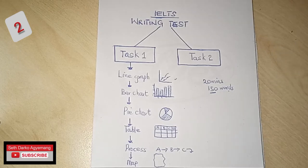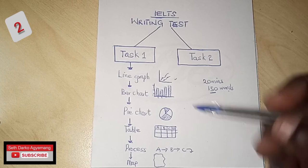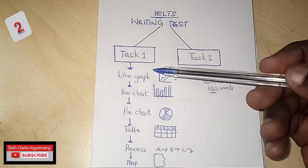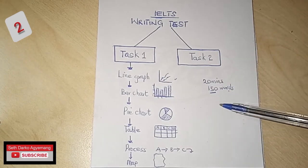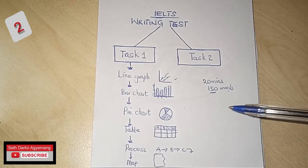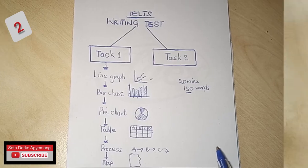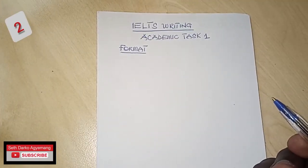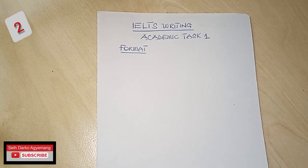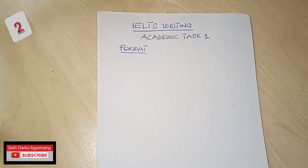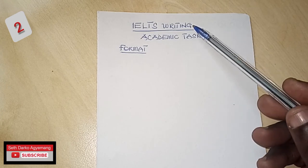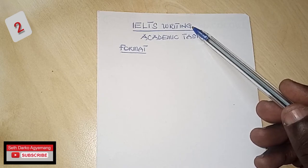Today I'm going to show you the format for writing Task 1, and it applies to all diagram types. Whether you get a line graph, a bar graph, a pie chart, or a map, the format I'm going to show you works. Also, note that IELTS writing comes in two types: IELTS Academic and General Training. With General Training you write a letter, but nurses sit for IELTS Academic — which is why you'll be describing diagrams.